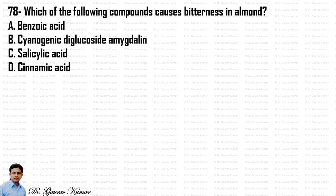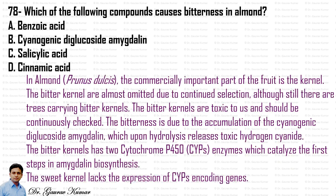Which of the following compounds causes bitterness in almond? Prunus dulcis is the botanical name of almond. The commercially important part of the fruit is the kernel. The bitter kernels are almost omitted due to continued selection, although there are still trees carrying bitter kernels. The bitter kernels are toxic and the bitterness is due to the accumulation of the cyanogenic diglucoside amygdalin, which upon hydrolysis releases toxic hydrogen cyanide.